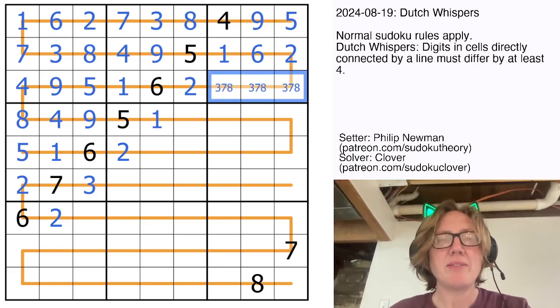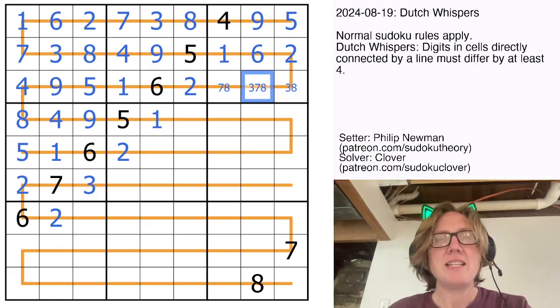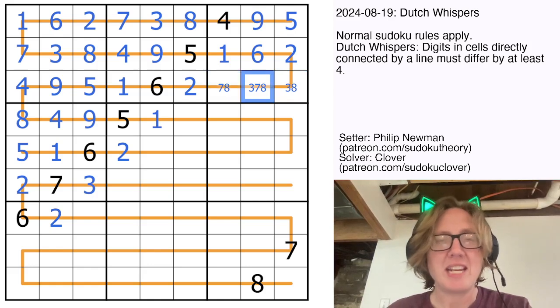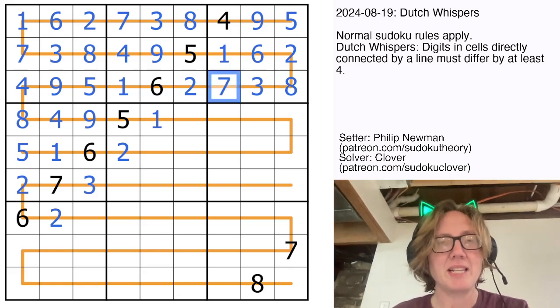Here we need a 3, a 7, and an 8. That can't be a 7. These two digits have to be far enough apart from each other, so they can't be a 7 and an 8. One of them will have to be a 3, so that will be our 3. And then that's all taken care of.